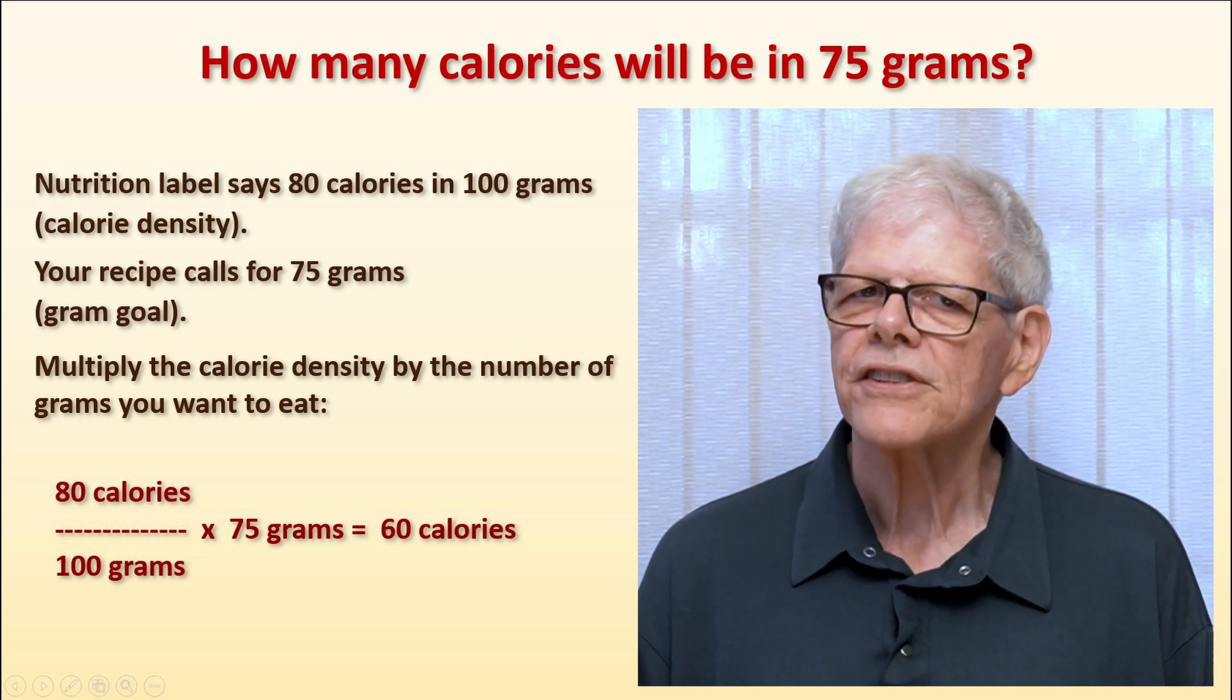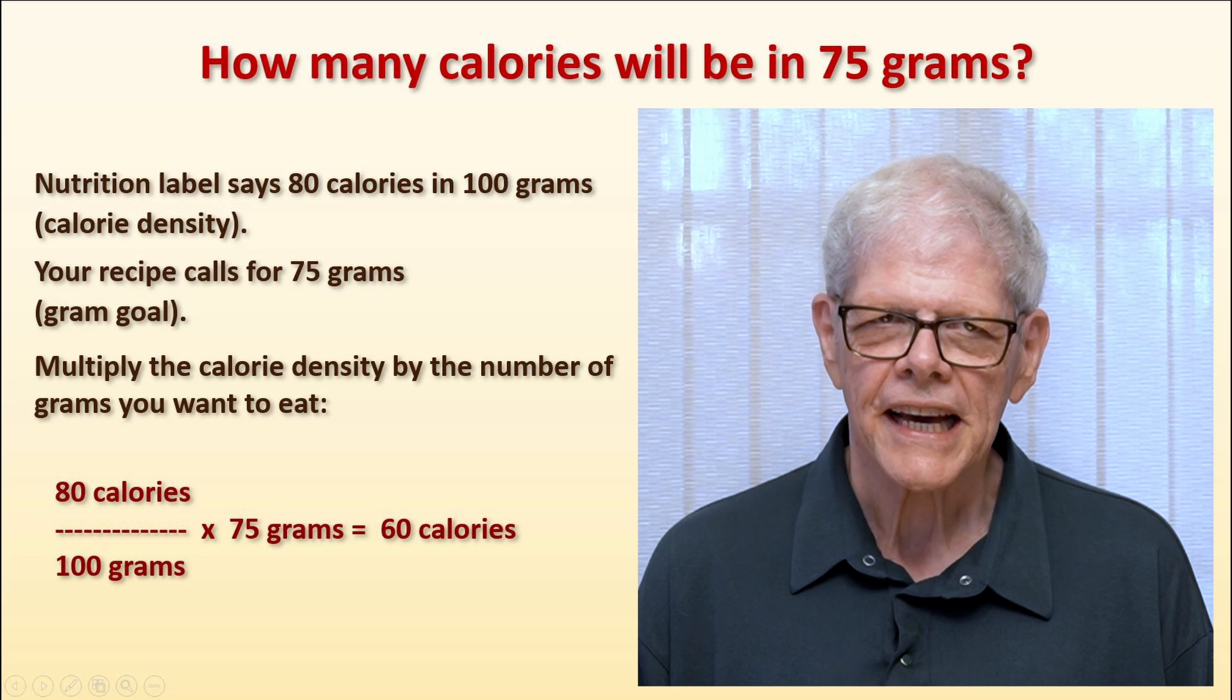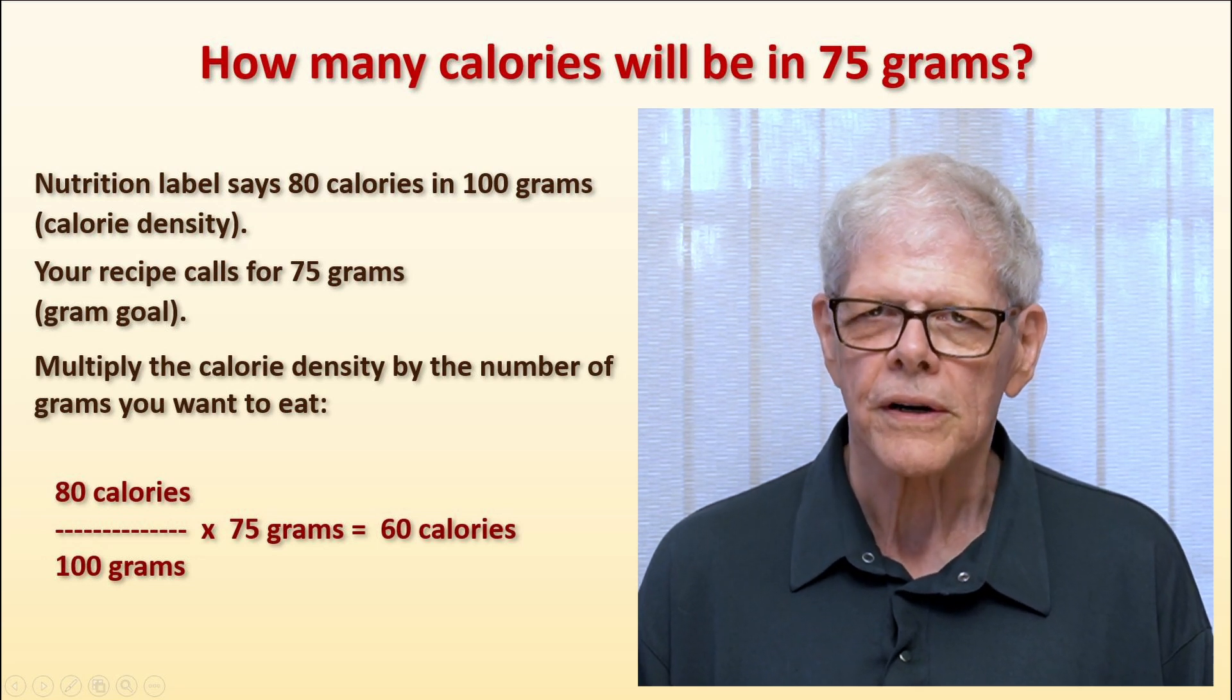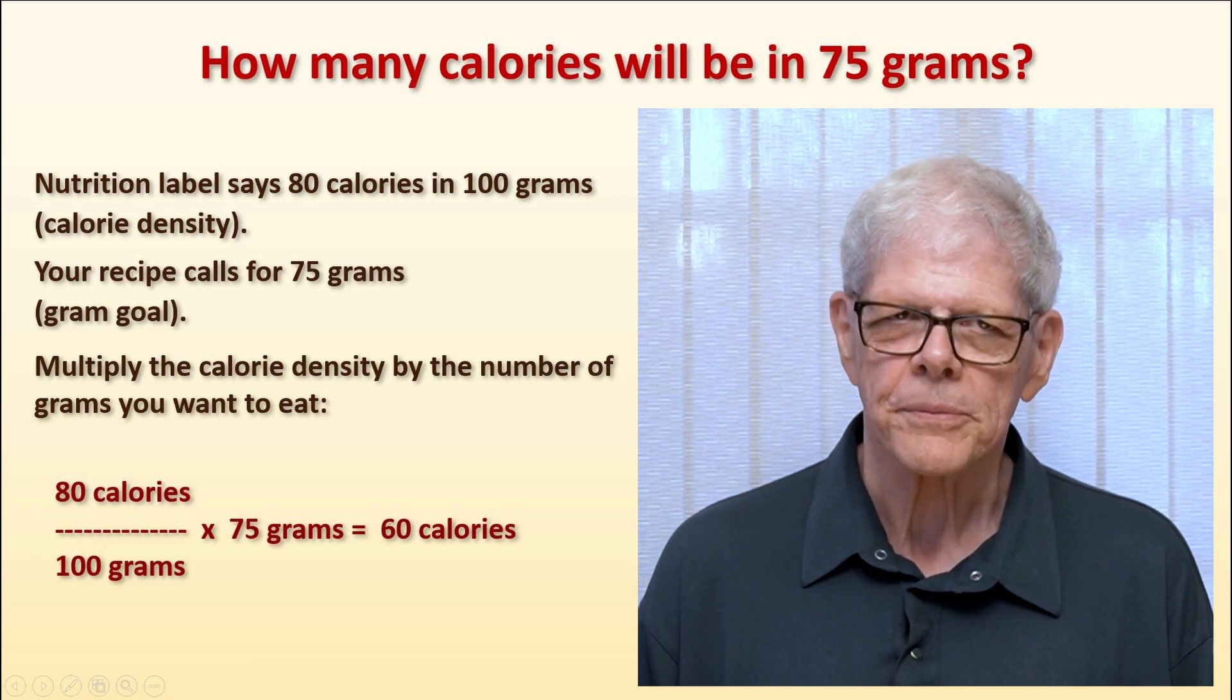In this case, don't flip the density over. Just divide the calories by the grams and multiply by the number of grams your recipe calls for. This will give you the number of calories in your recipe.